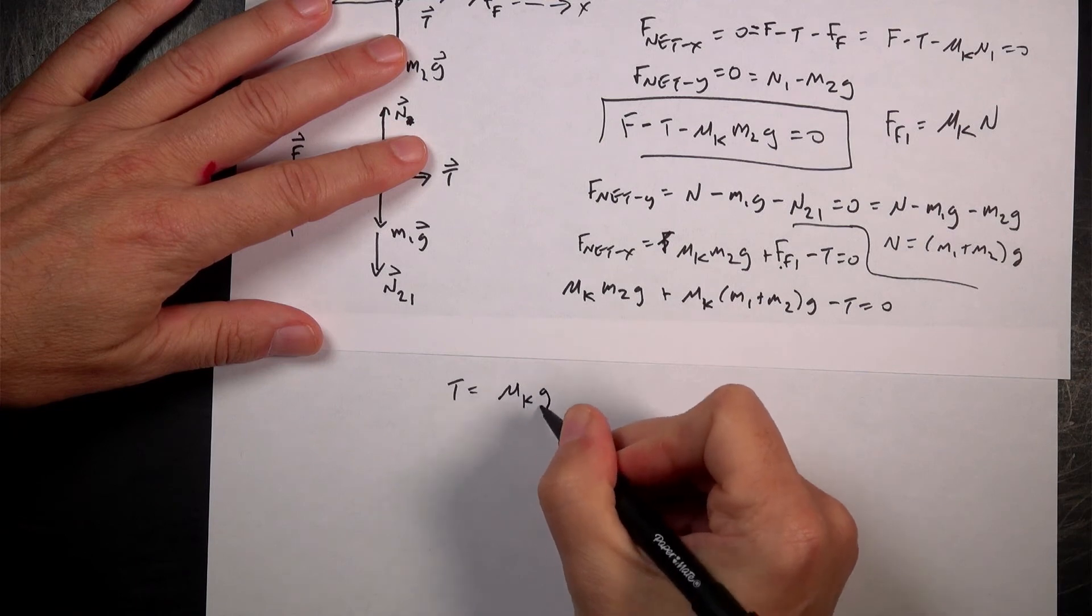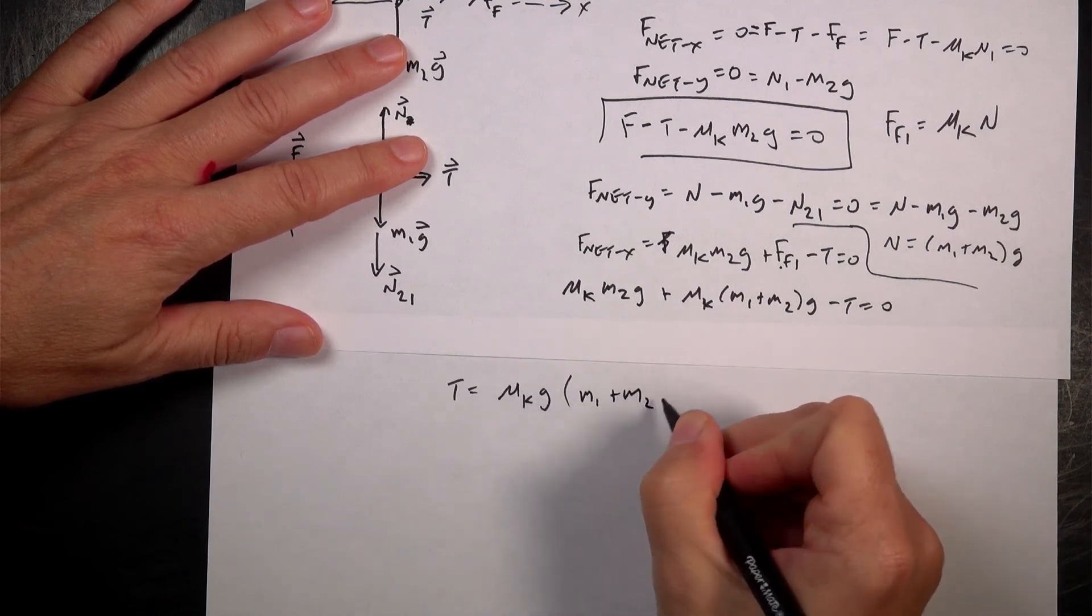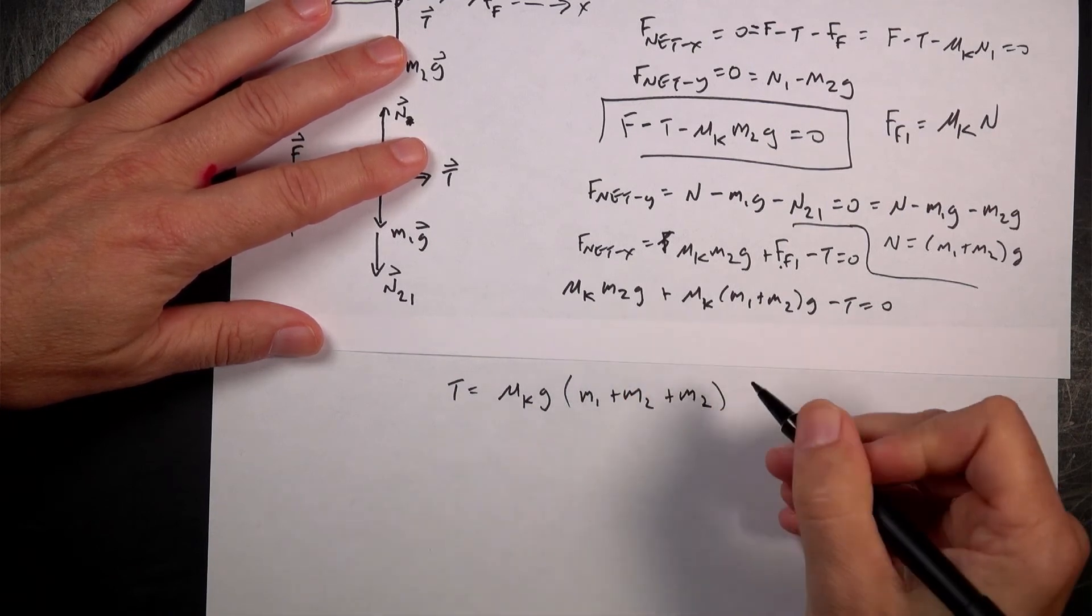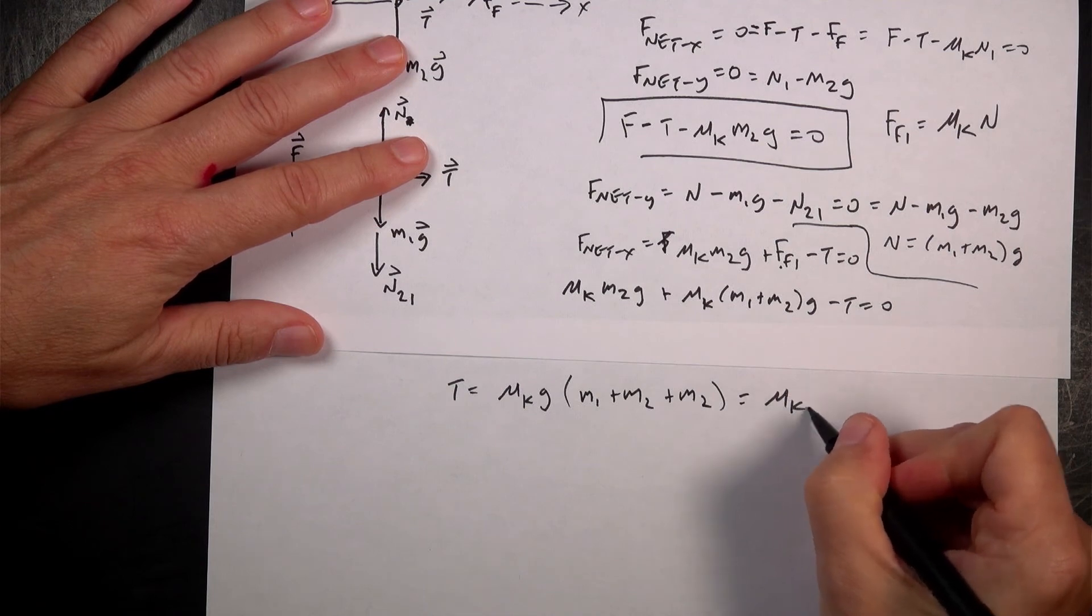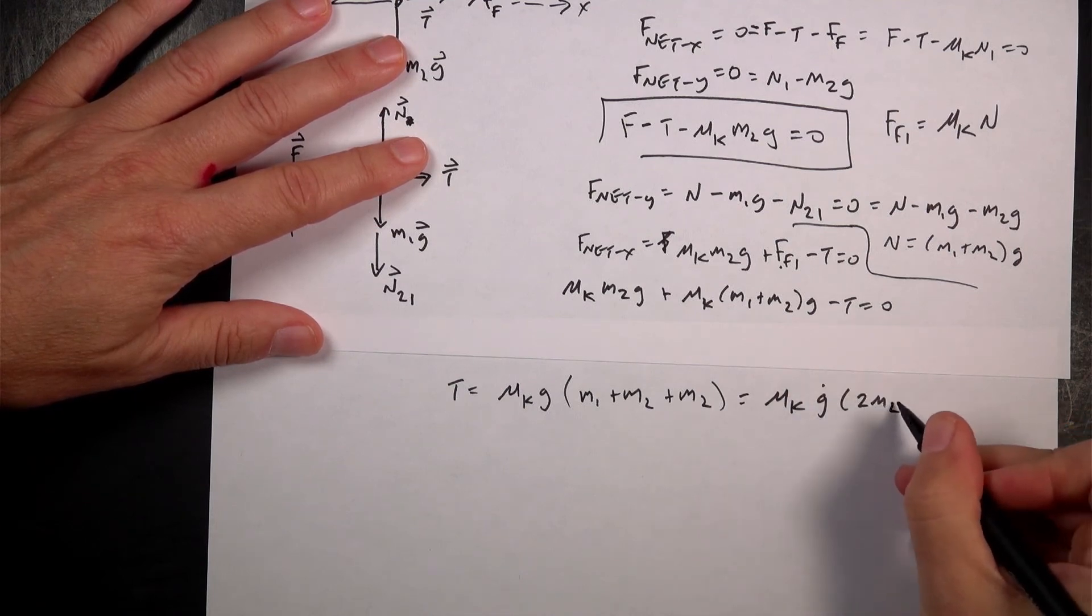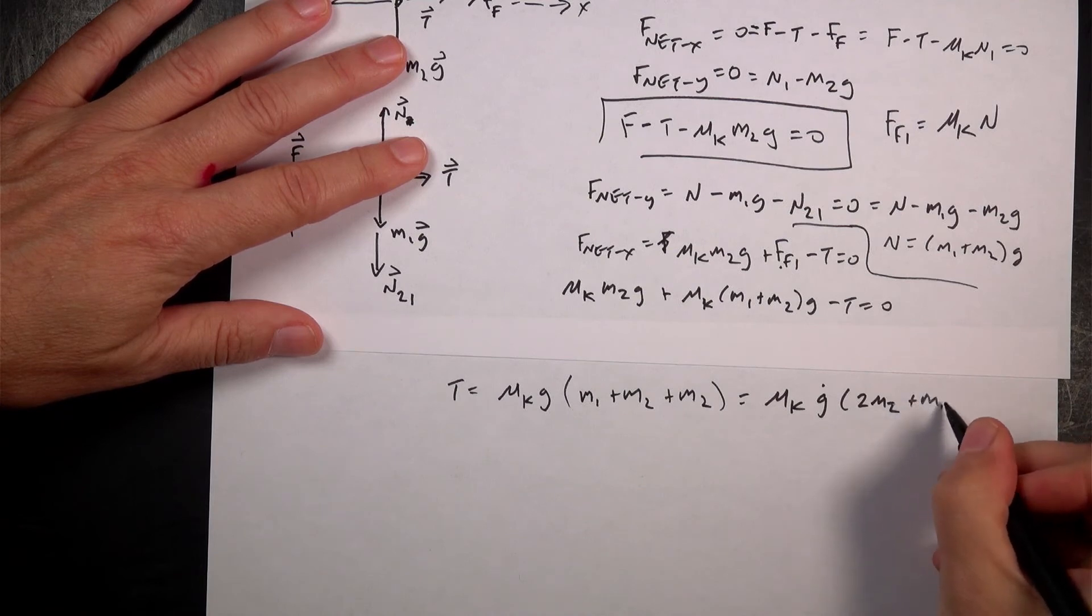Mu K G times (M1 + M2 + M2). And you can only do that because these two coefficients of friction are the same. So it's going to be equal to mu K times G times (2M2 + M1).